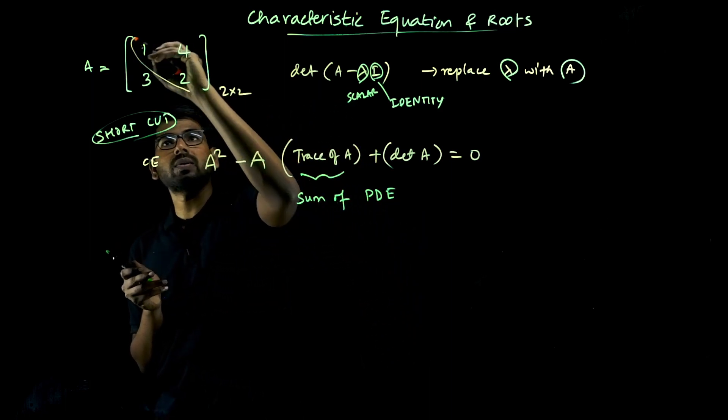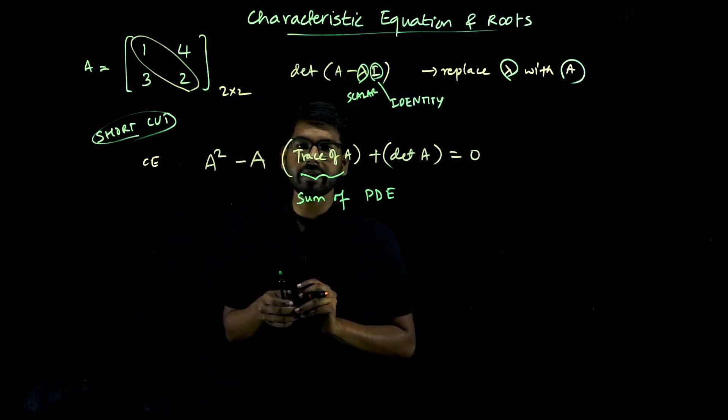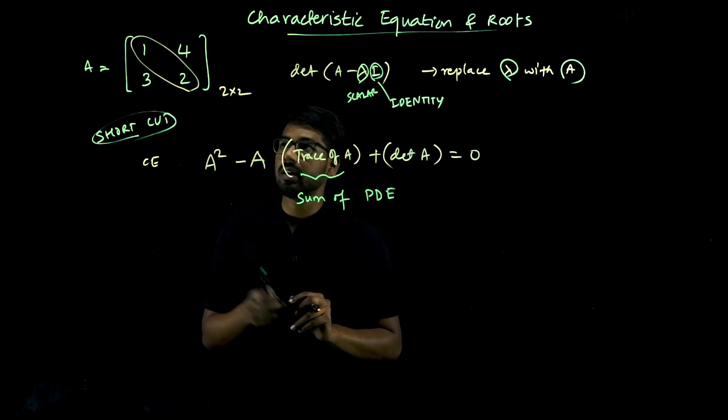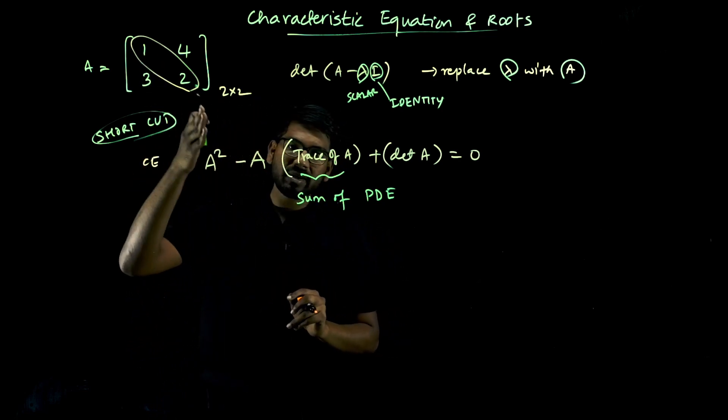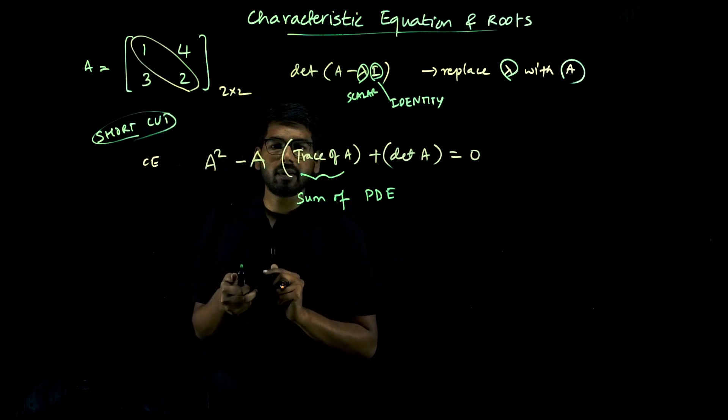The elements 1 and 2 are called principal diagonal elements. The sum of principal diagonal elements is the trace.